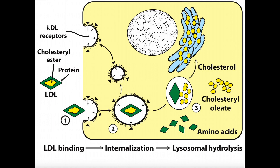The liver manufactures LDL, low-density lipoprotein, and its major job is to deliver cholesterol to cells. Cholesterol is actually packaged in a modified form called a cholesterol ester — it's basically cholesterol with a fatty acid that's been esterified to its hydroxyl group, making this transformed type of molecule called the cholesterol ester.